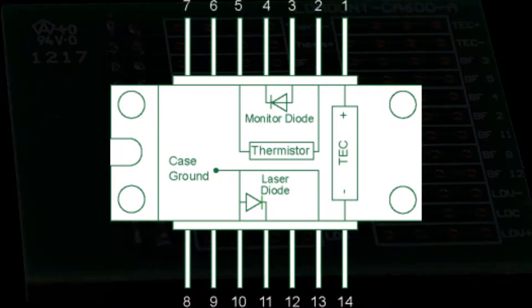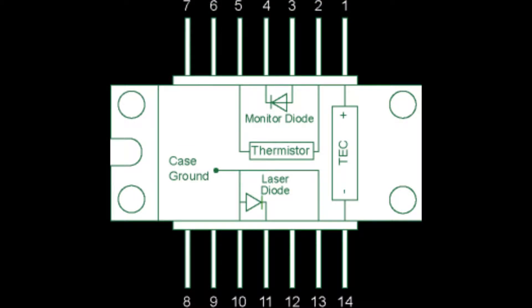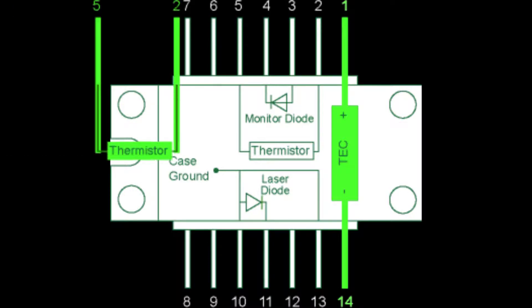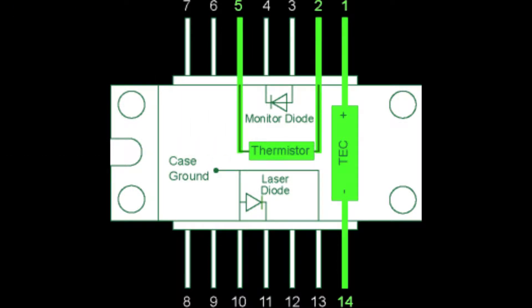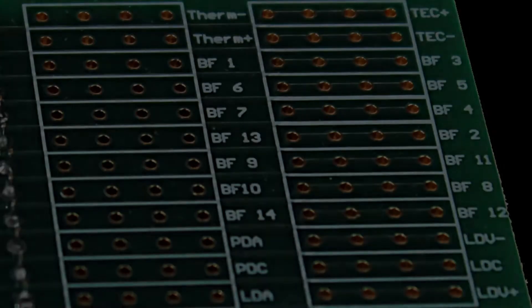In this diagram, the thermoelectric cooler is connected to pins 1 and 14 of the butterfly package. There is a thermistor to monitor the laser temperature between pins 2 and 5. A monitor photodiode connects between pins 3 and 4, and the laser diode itself has anode connections to pins 10 and 13, with the cathode connecting to pin 11. The remaining butterfly pins are unconnected.